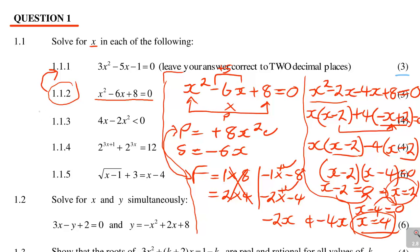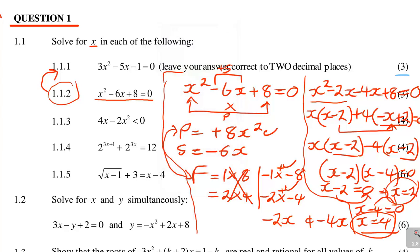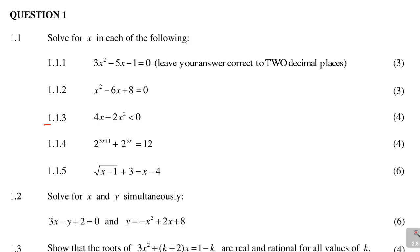Now question 1.1.3, which is 4 marks: solve for x given 4x − 2x² < 0. These are inequalities, so pay attention. The first thing you need to do is find critical values by equating to zero: 4x − 2x² = 0. The simplest method is to factor out 2x: 2x(2 − x) = 0. So either 2x = 0, giving x = 0, or 2 − x = 0, giving x = 2. These are the critical values.